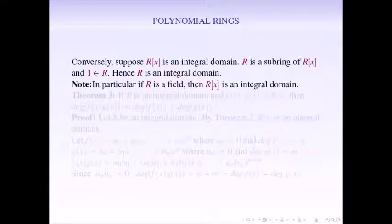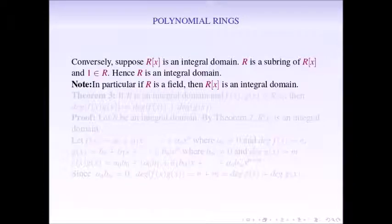Conversely, assume that R[x] is an integral domain; it is enough to prove that R is an integral domain. Since R is a subring of the integral domain R[x] and 1 is an element of R, R is an integral domain. In particular, if R is a field, then R[x] is an integral domain, because every field is an integral domain, and by the previous theorem, if R is an integral domain then R[x] is an integral domain.